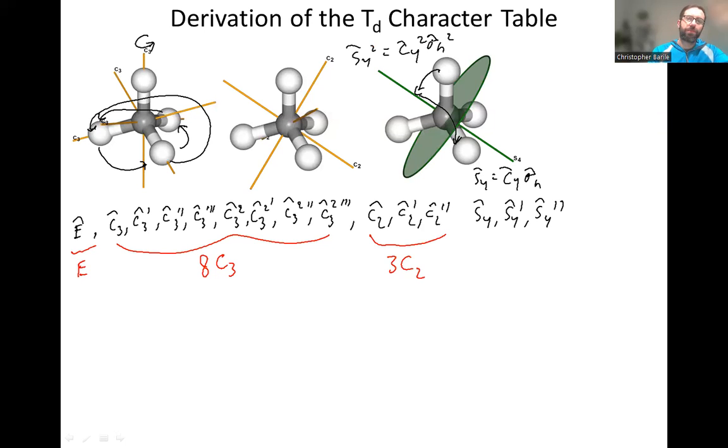And so that's equal to identity, if we go top to bottom and then bottom back to top. So that's just equal to C4 twice, and that's just equal to C2, and we already have the C2s there. So S4 twice doesn't do anything.